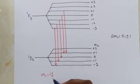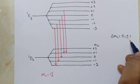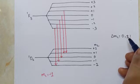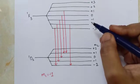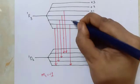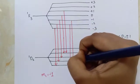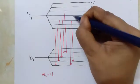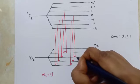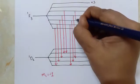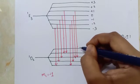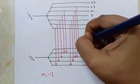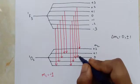Similarly, for ΔmL = 0, the transitions are: −2 to −2, −1 to −1, 0 to 0, +1 to +1, and +2 to +2. Here too we get 5 allowed transitions.